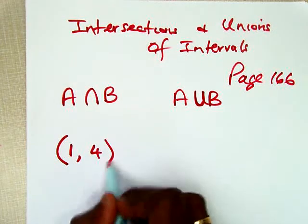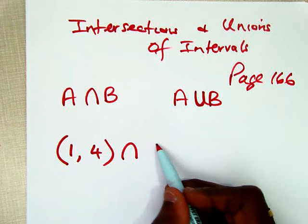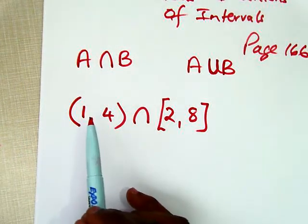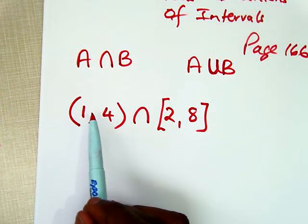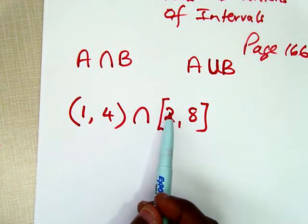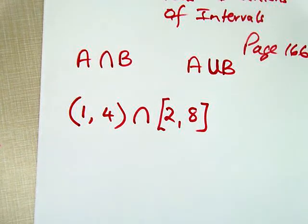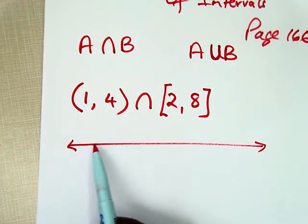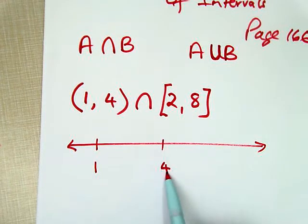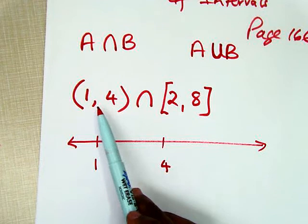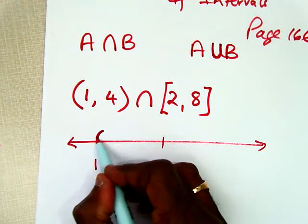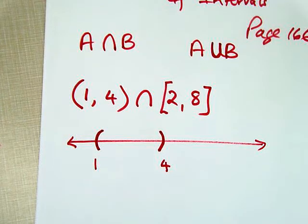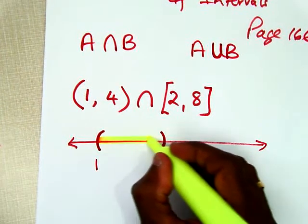So, (1, 4) intersects with [2, 8]. This is saying that if you have the interval x is greater than 1 and less than 4, where does it intersect with x is greater than or equal to 2 and less than or equal to 8? One way to do this is to construct a number line. We're going to start at 1 and go up to 4. Because it's just less than 4 and greater than 1, we use parentheses at 1 and at 4, and the solution set is all values between 1 and 4.